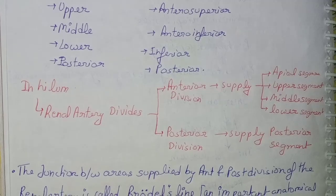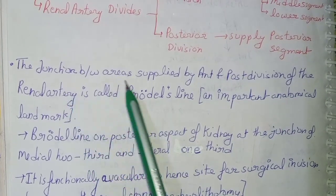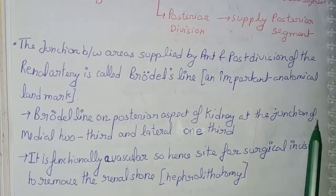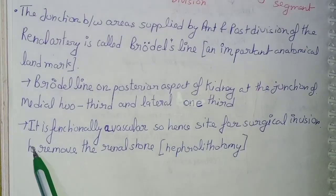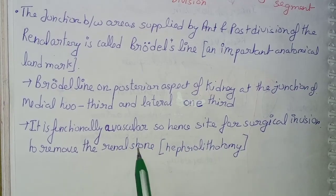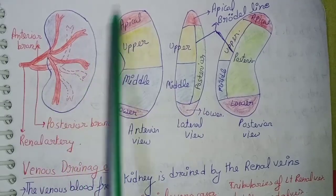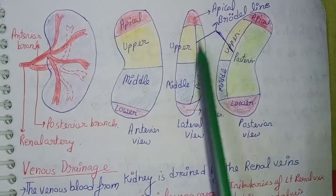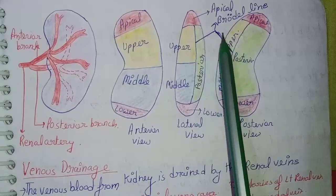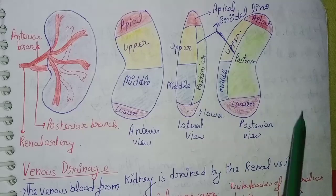The junctional area supplied by the anterior and posterior divisions of the renal artery is called Brodel's line — an important anatomical landmark. Brodel's line is on the posterior aspect of the kidney at the junction of the middle two-thirds and lateral one-third. Its importance is that it is functionally avascular, meaning there is no blood supply there. Hence, it is the best site for a surgical incision to remove renal stones (nephrolithotomy), as you can see in the diagram showing the anterior branch, posterior branch, and different vascular segments.